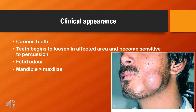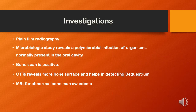Coming to the clinical appearance of acute osteomyelitis, it is always associated with a carious tooth. The teeth begin to loosen in the affected area and become sensitive to percussion, and an affected odor is seen. Mandible is more commonly affected than maxilla. Investigations include plain film radiography such as IOPA, occlusal radiograph, and pantomographic views. Microbiologic studies reveal a polymicrobial infection of organisms normally present in the oral cavity. Bone scan shows positive, and CT reveals more bone surface and helps in detecting sequestrum.